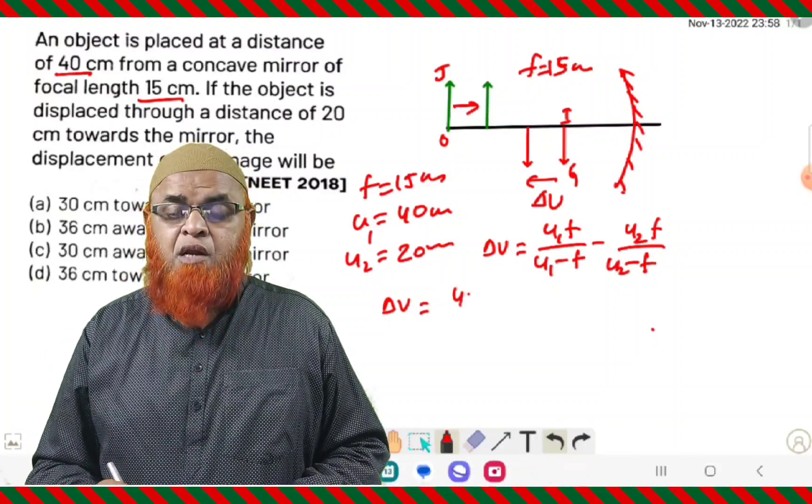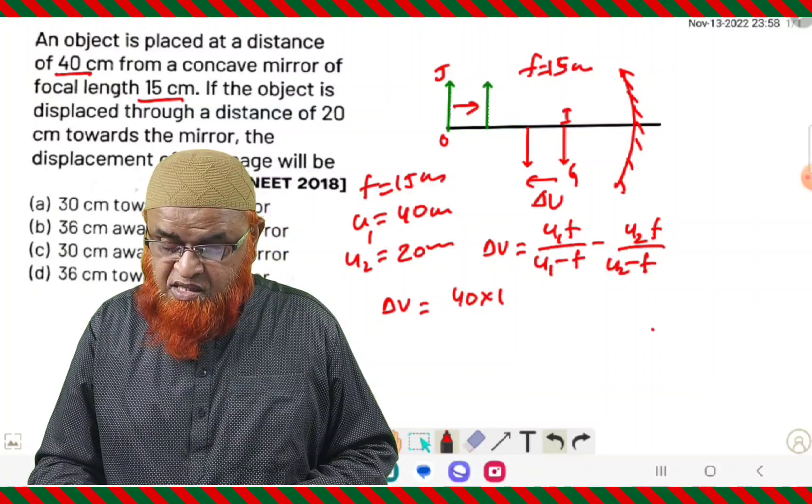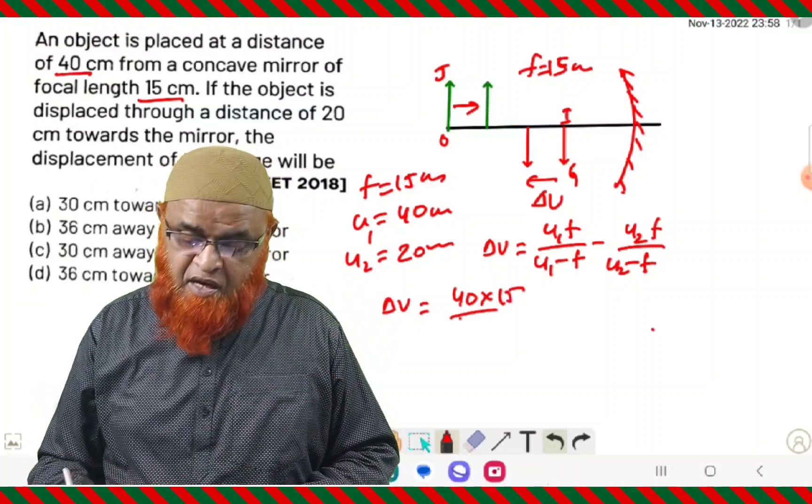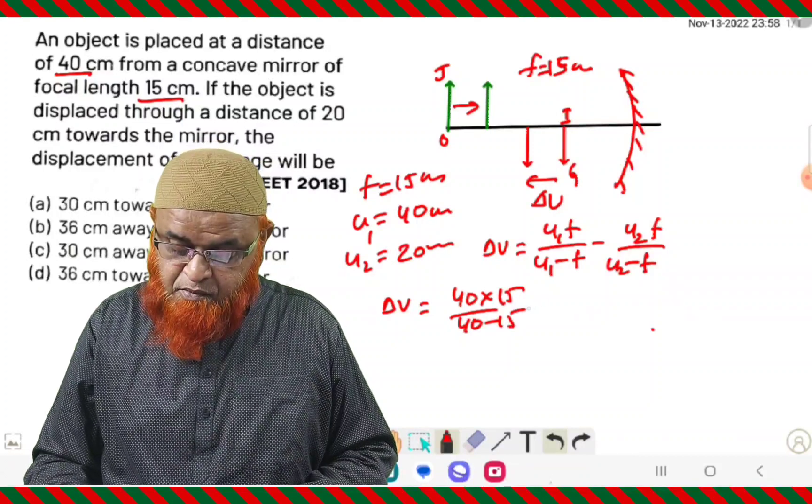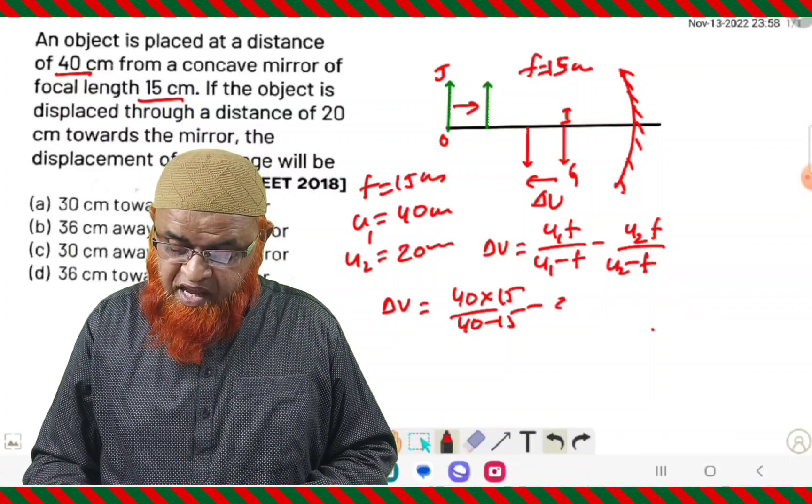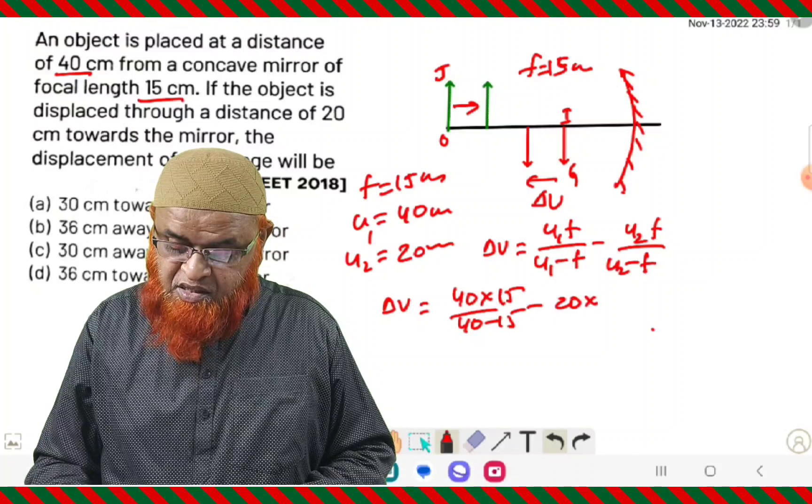Now you have to find out how much the image has been shifted away from the mirror. For that there is a shortcut formula. That is Delta V equals U1F by U1 minus F, minus U2F by U2 minus F.